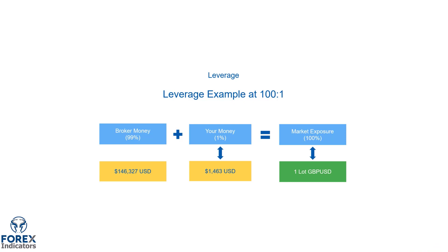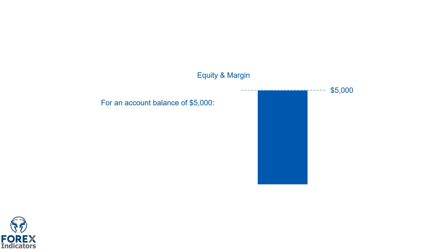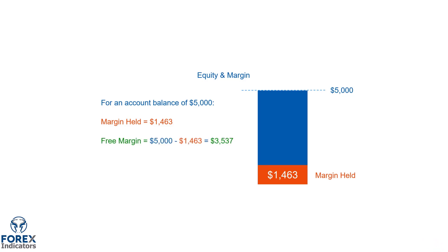This $1,463 represents the margin held for the position. Let's take a look at that in a $5,000 trading account, which is a typical amount that many traders open up with initially. If you were to buy one lot of the Great British Pound, the margin held would be $1,463. The remaining amount in the account would become what's called free margin. Free margin can be calculated by taking the equity in the account and subtracting the margin held, giving a total free margin of $3,537.